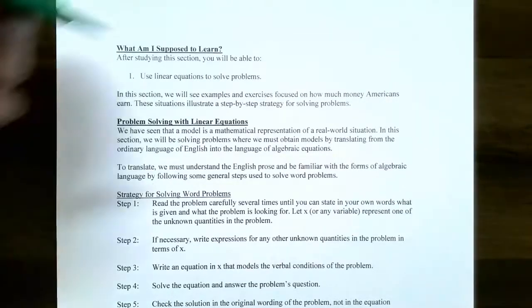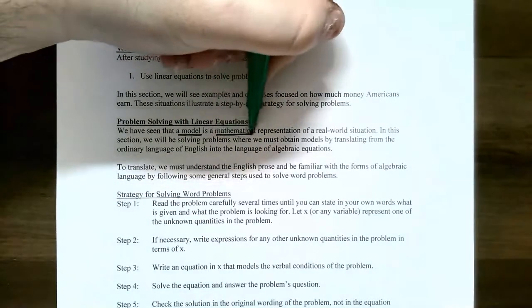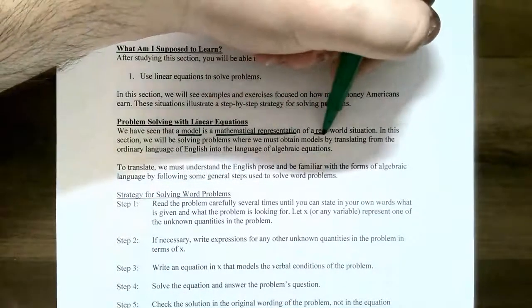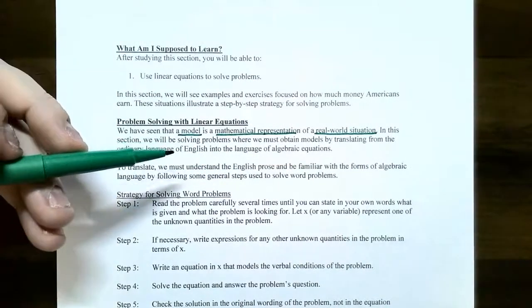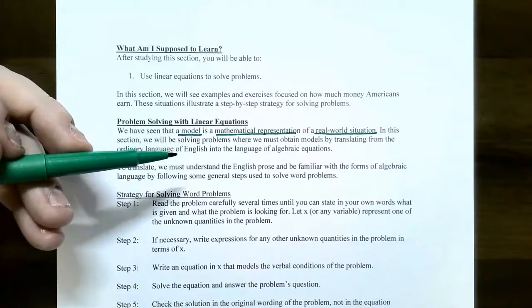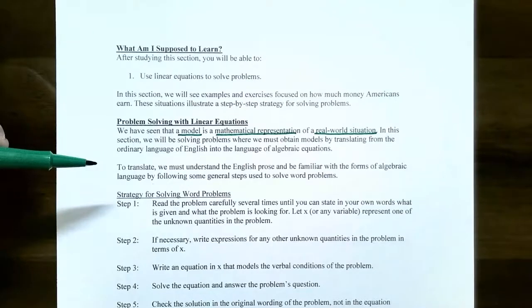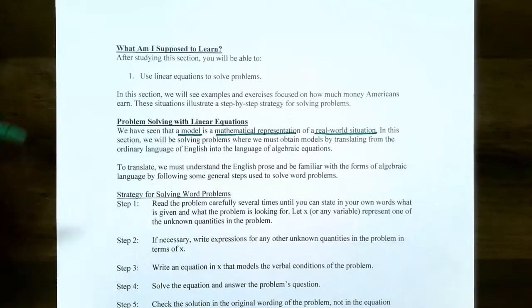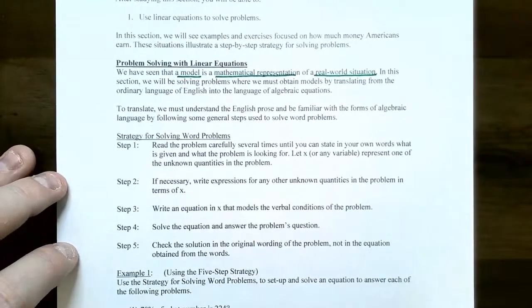We've already seen that a model is a mathematical representation of a real-world situation — it can be an equation. In this section we're going to be solving problems where we must obtain the model by translating ordinary English language into the language of algebraic equations. To translate from a word problem into an algebraic equation, we need to take the following steps, which we'll use throughout this entire section to solve word problems.